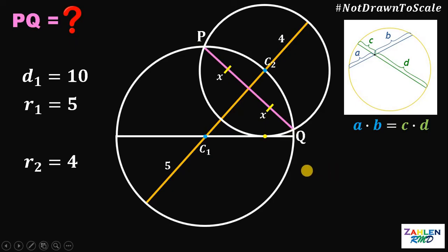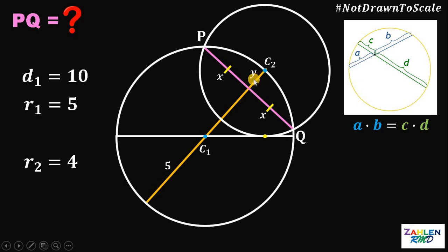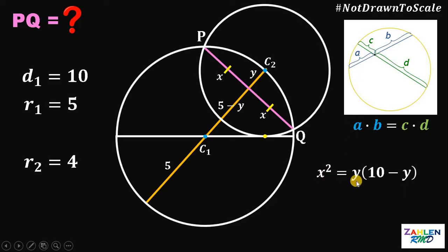First, let's focus on the big circle and apply the Chord-Chord Power Theorem. Let this segment be equal to y. Since the radius of the big circle is 5, the remaining segment is 5 minus y. Using the theorem, we get x squared equals y times (10 minus y).